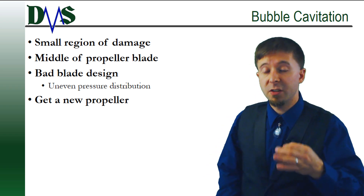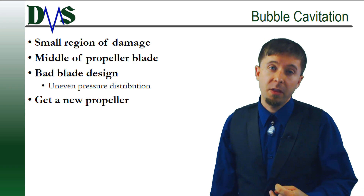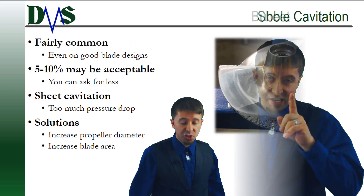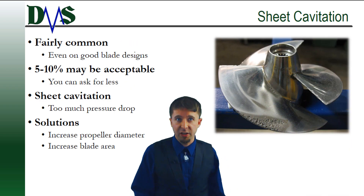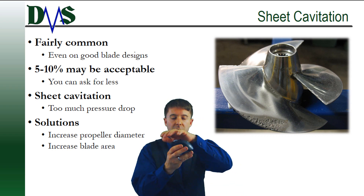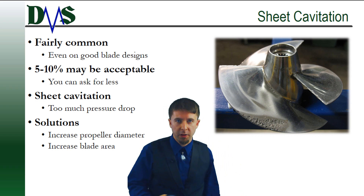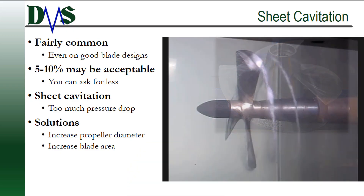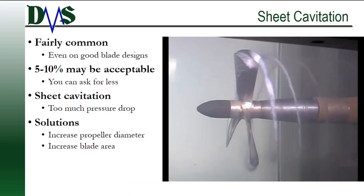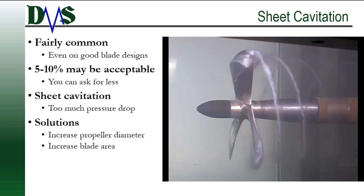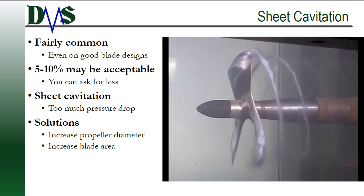If you're suffering major problems from this, the only real solution is to get a new propeller. Sheet cavitation, on the other hand, occurs across the entire outer face of the propeller blade. Small amounts of sheet cavitation are acceptable — only about five to ten percent of the blade area — concentrated around the tips of the blade.